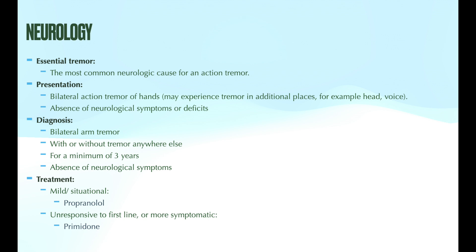Essential tremor is the most common neurological cause for an action tremor. The incidence increases with age, although it can affect younger patients, and up to 70 percent of patients actually report having a family history of essential tremor, so there is definitely a big familial component. Symptoms include bilateral tremor of the hands with action and the absence of neurological deficits. They can experience tremor in additional places like their head or their voice, but this is not typical.